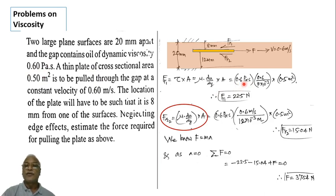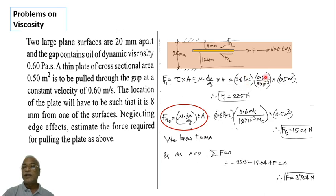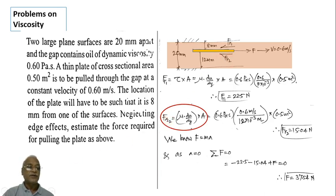Substituting for fv1: mu is 0.6 Pascal second, velocity is 0.6 meter per second, thickness of the upper oil film is 8 mm converted to 8 into 10 raised to minus 3 meters, and area is 0.5 meter square. The calculation gives fv1 equal to 22.5 Newtons.